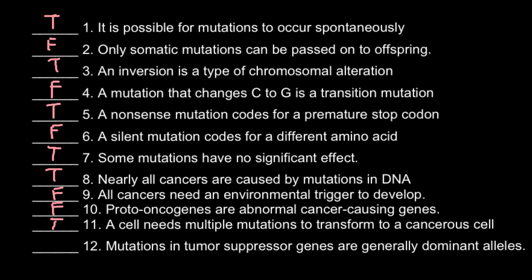Mutations in tumor suppressor genes are generally dominant alleles — and this is false. Usually we need the same mutation to happen in both versions of the gene. We have two sets of chromosomes, one from the mother and one from the father, and even if we have one normal allele, that is usually enough to suppress the gene that may cause cancer.